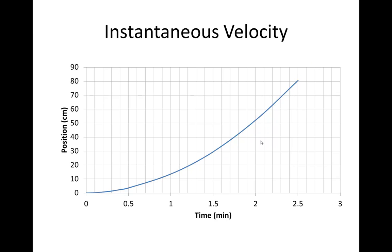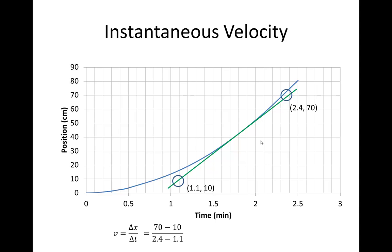Here's that same graph. I'm going to take a tangent line and pick two convenient points. They don't have to be touching the graph — they can be two independent points that are easy to read. I found two that had specific locations that were relatively easy to read. Taking those two points, velocity is simply the slope of that line segment — 46.2 centimeters per minute.